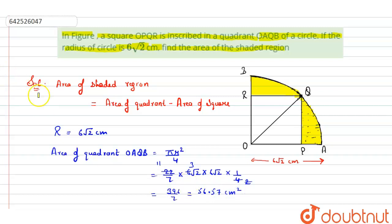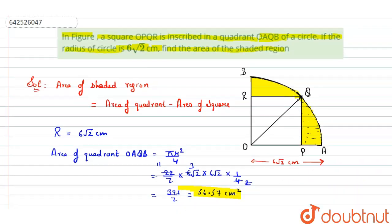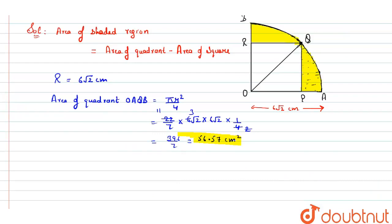Now you have to find the area of square. As radius equals 6√2, that means this is also equals to 6√2 centimeter, and OQ is also equals to 6√2 centimeter, which is the diagonal of the square.